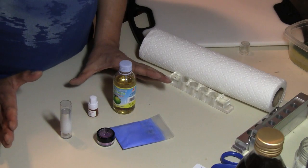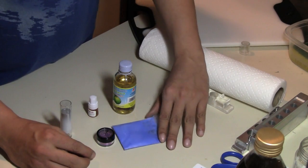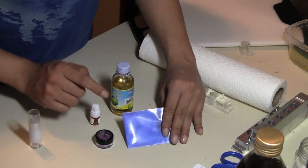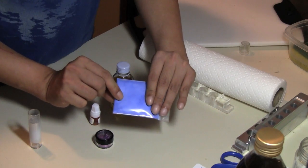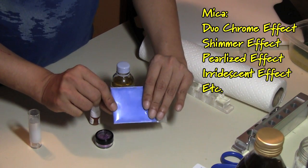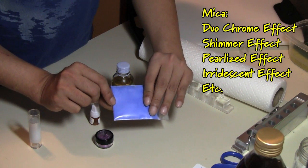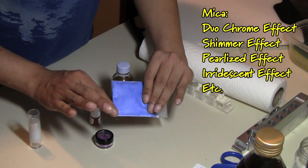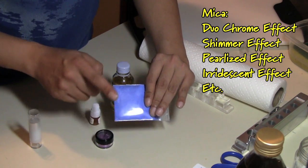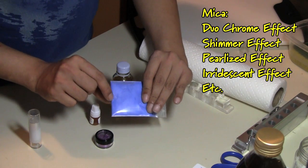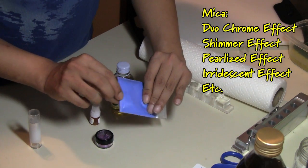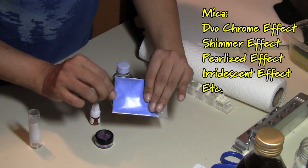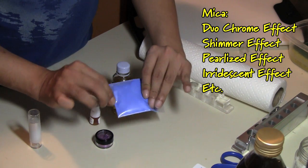So while our lipsticks are setting in the freezer, I just want to go over some optional products or ingredients that you can actually add to your lipstick. And this one is a mica, and this is a duochrome mica. This is duochrome purple because I'm working on a lavender color. Micas have different effects. It's going to add shimmer to your lipstick. And this particular one is going to add a duo color shimmer to the lipstick. As you can see, it changes from like blue and purple depending on how light hits it.